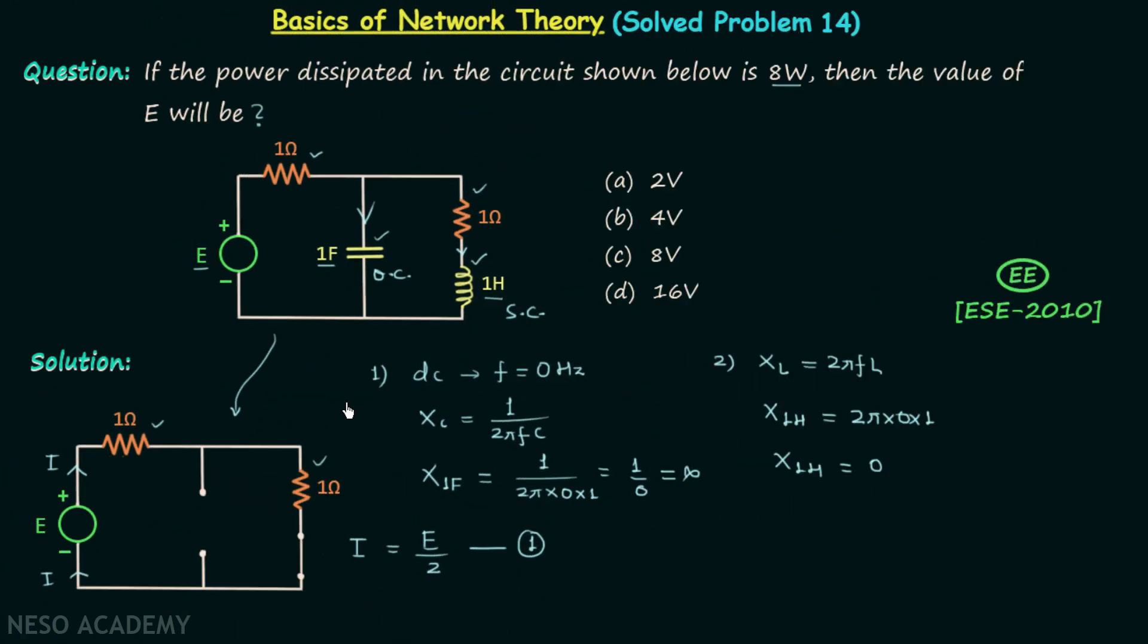Initially I said that we have to focus on three important points. First point is this one, second point is this one, and the third point is power will get dissipated only in resistors. Capacitor and inductor are energy storing elements—they will not dissipate the power.